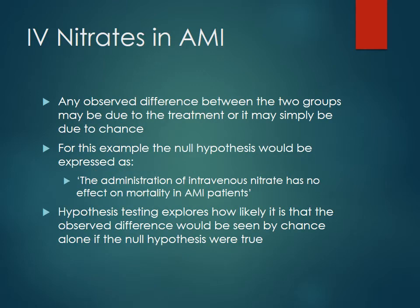As we know about hypothesis testing, any observed difference between the two groups could be due to the actual treatment — which would be a rejection of the null hypothesis — or could be simply due to random chance, in which case we would keep the null hypothesis. The null hypothesis for this example would be that the administration of intravenous nitrates has no effect on mortality in patients with acute myocardial infarction. Basically, hypothesis testing explores how likely it is that the observed difference would be seen by chance alone if the null hypothesis were true.